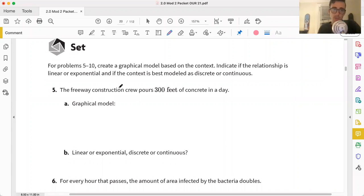In the set, problem 5 through 10, we're creating a graphical model based on the context. Indicate if the relationship is linear or exponential. Remember, it's linear if it's a straight line. Keyword here is line. Exponential if it's a curve going up and to the right. And if the context is best modeled as discrete or continuous. Recall, discrete, it's just a dot, and it's a bunch of them. Whereas continuous, it's just continuing on, just cruising if it's continuous.